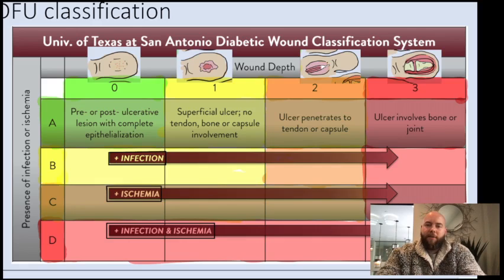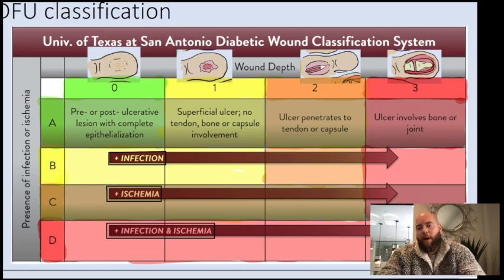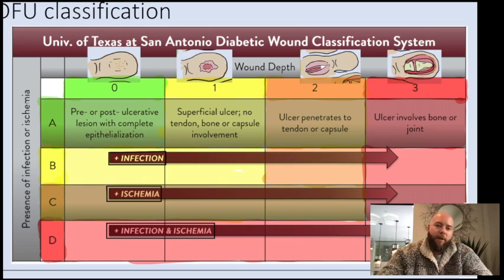This is the University of Texas Diabetic Wound Classification System for diabetic foot ulcers. It's a bit more involved and more difficult to remember than the Wagner Classification System, but it's a lot more detailed in what it describes. You need to know this one because it's more field-specific.